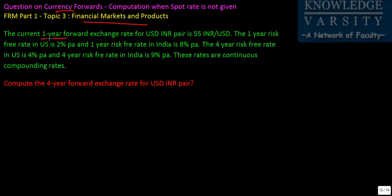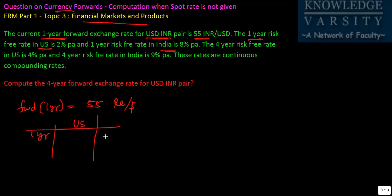What they have given is a one year forward exchange rate for the USD-INR pair is given as 55 rupee per dollar. The one year risk free rate in the US is given and also the India rate is given. The one year US rate is given, the one year India rate is given. US rate is given as 2% and India rate is given as 8%.